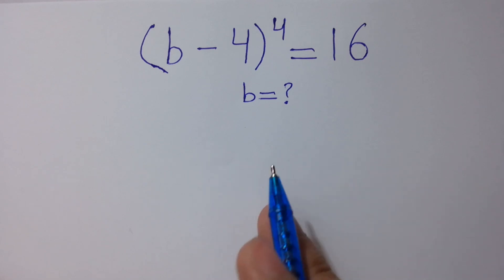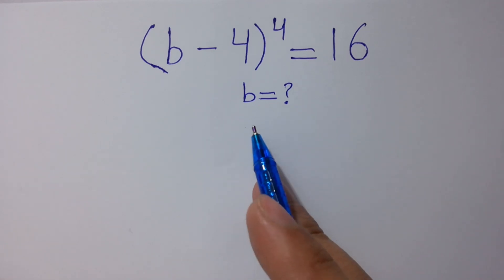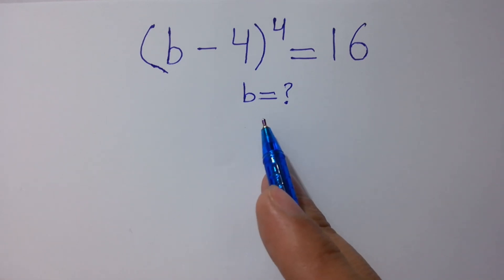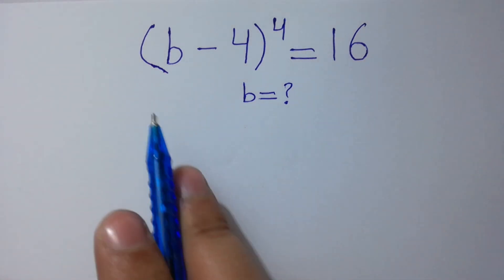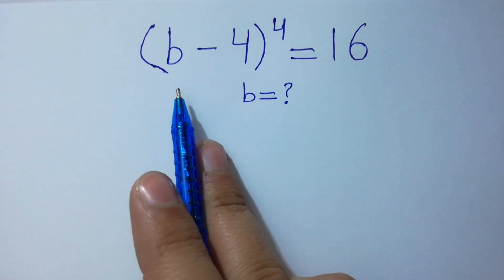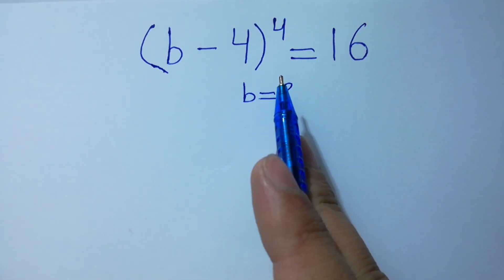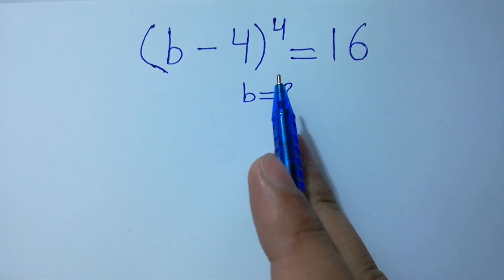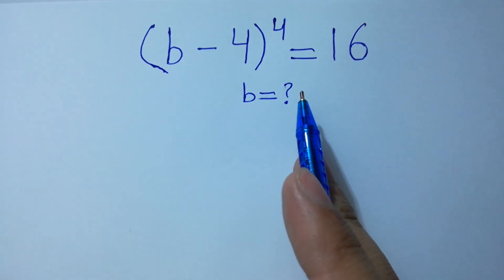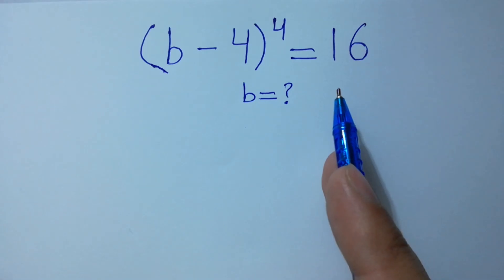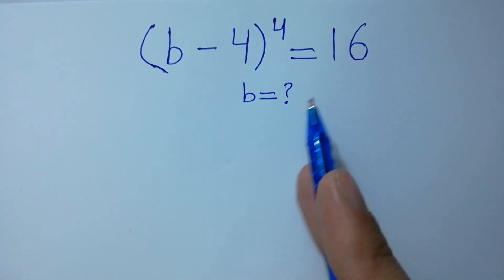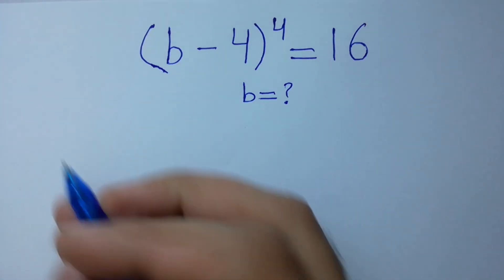Hello friends, find the value of b if (b-4) to the whole power 4 equals 16. Let's have a solution.